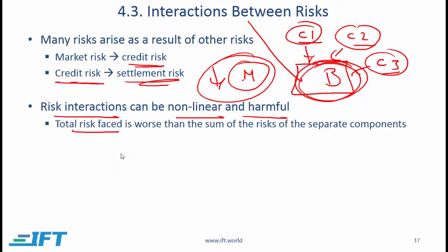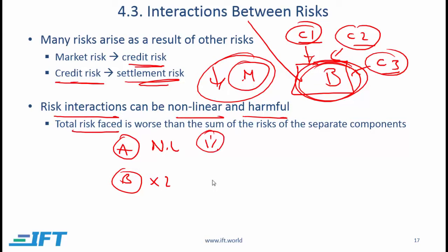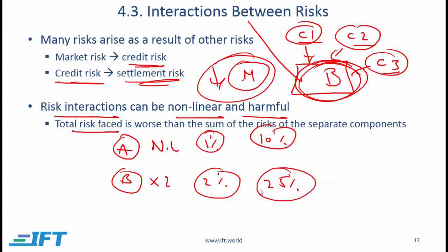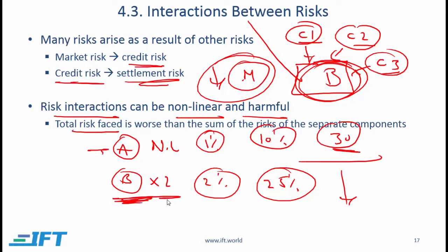Consider company A with no leverage and company B with two times leverage. A 1% loss to the non-leveraged firm means a 2% loss to the leveraged firm. But if the loss is 10% for company A, company B's loss might be more than 20% — say 25% — because the cost of servicing debt increases. If there is a 30% loss to company A, company B may not be able to handle it due to the toxic interplay between levered risk and liquidity problems, and might lack the cash to meet its obligations. This illustrates the non-linear link between various types of risks.